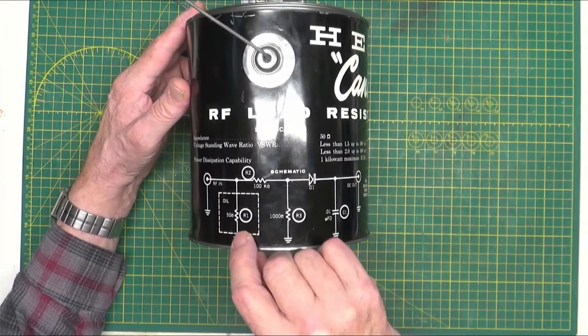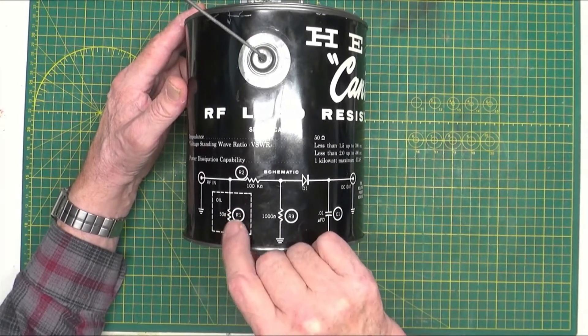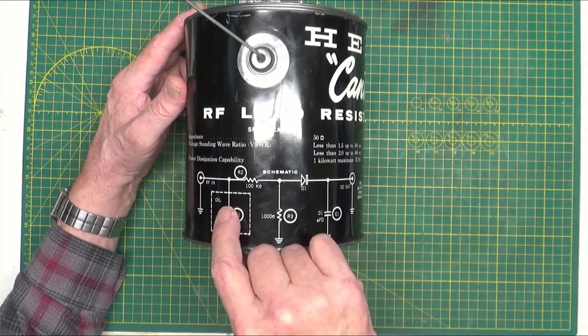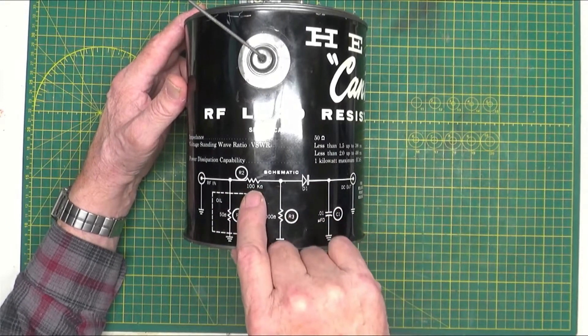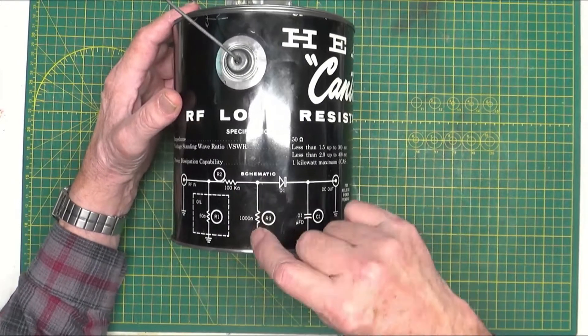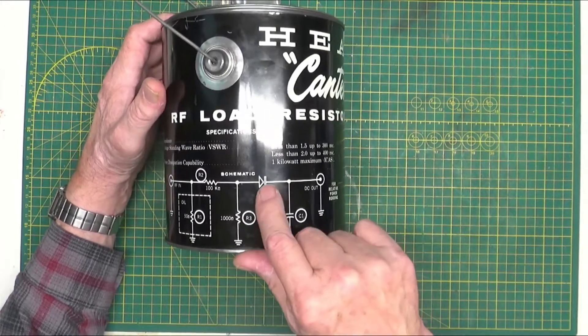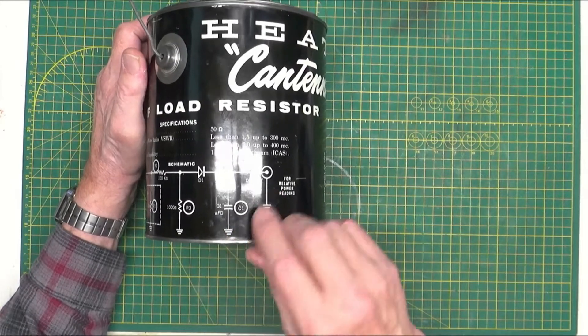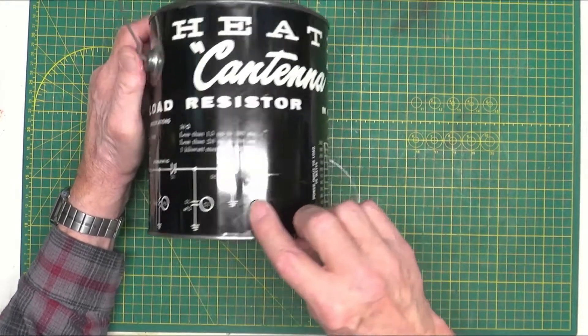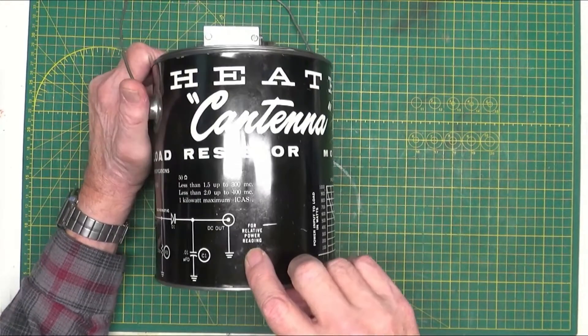Here's what's in it: it's got your RF in, a 50 ohm resistor R1 bathed in oil, then a 100K resistor with a 1000 ohm resistor going to ground, a diode, and a 0.01 microfarad capacitor to the DC out for relative power readings.